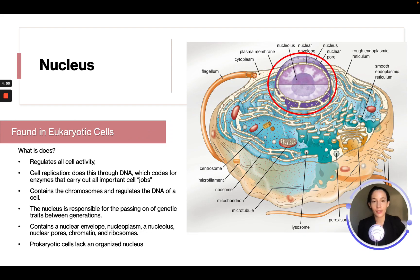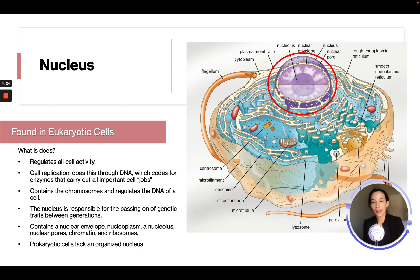The nucleus is found only in eukaryote cells. It regulates all cell activity — it is really the brain of the cell. It also hosts cell replication through DNA, which codes for enzymes and carries out important cell jobs. It contains the chromosomes, regulates the DNA of the cell, and is responsible for passing on genetic traits between generations.